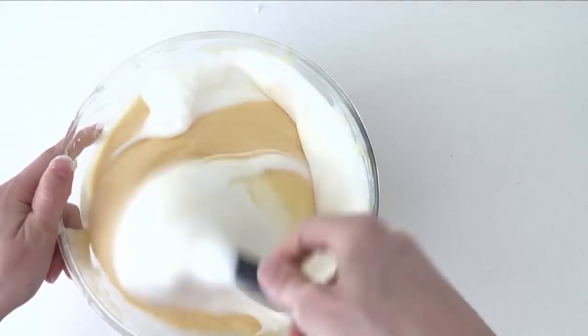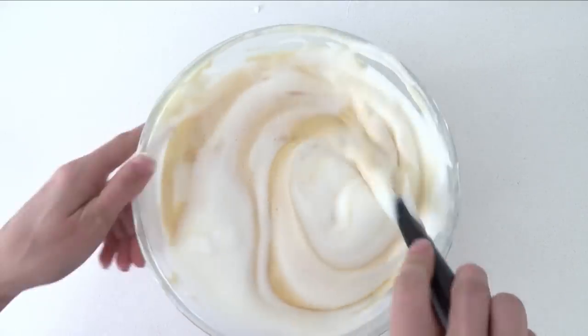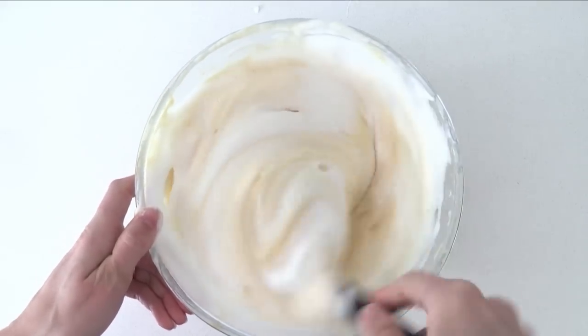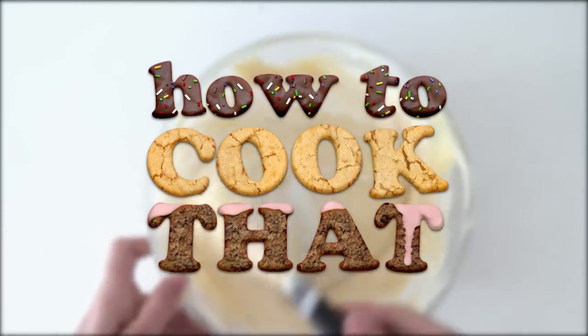Now for the cake itself. You'll need three round 20cm cakes. I'm using my sponge cake recipe. The video for that and the frosting recipes is on the howtocookthat.net website.